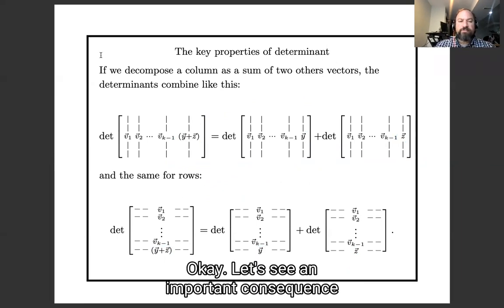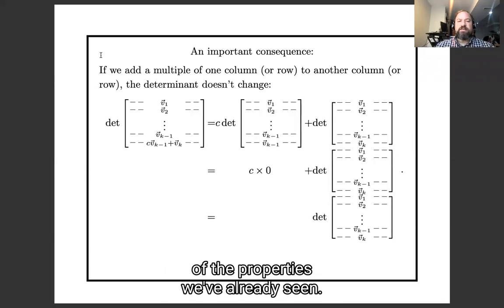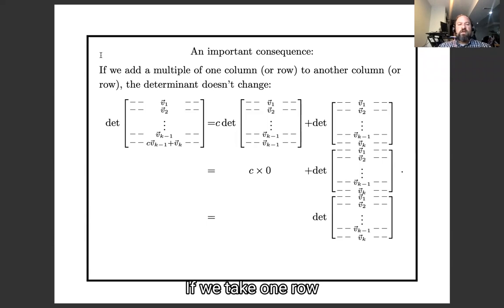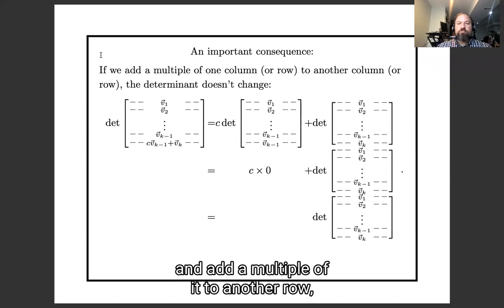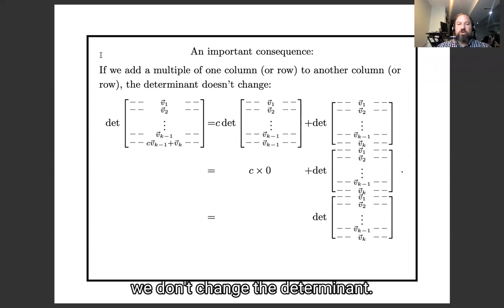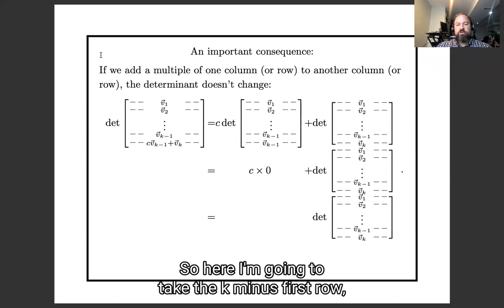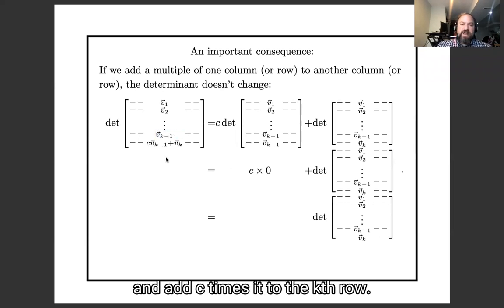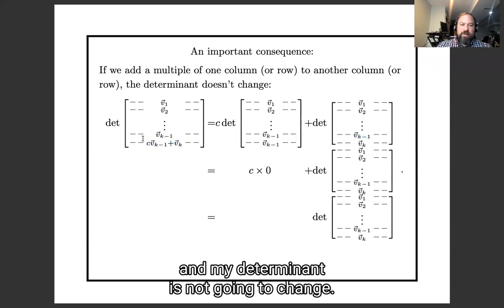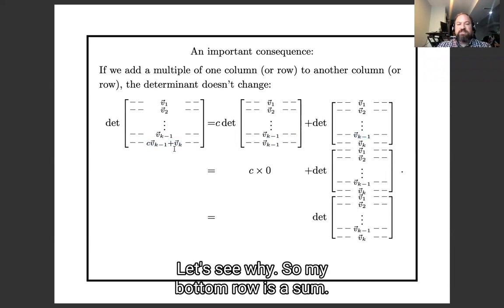Okay, let's see an important consequence of the properties we've already seen. If we take one row and add a multiple of it to another row, we don't change the determinant. So here I'm going to take the k minus first row, and add c times it to the kth row, and my determinant is not going to change. So let's see why.